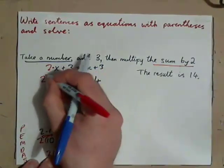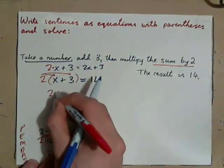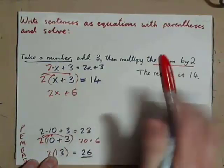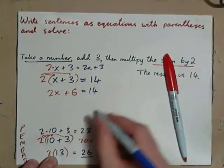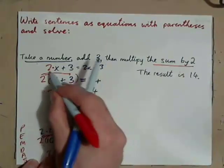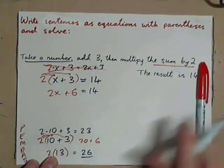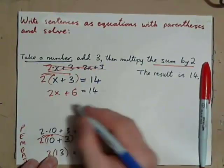And watch, when you apply the distributive property, you get 2x plus 6 equals 14, right? Not 2x plus 3. So, you need parentheses.